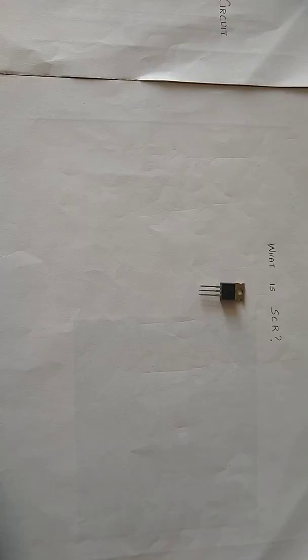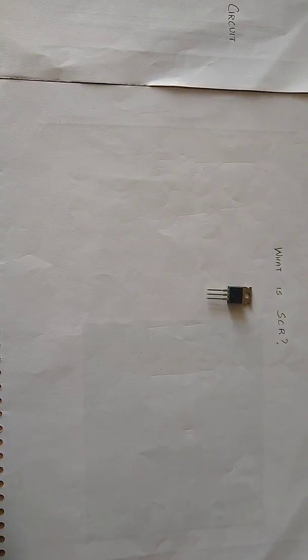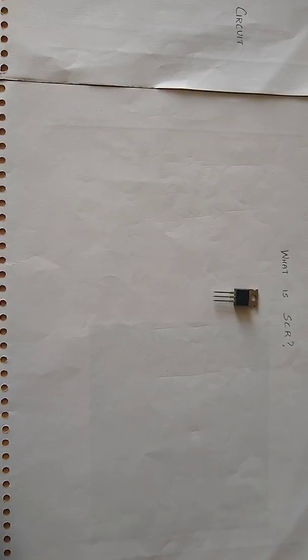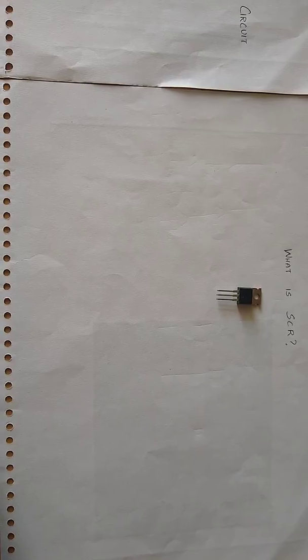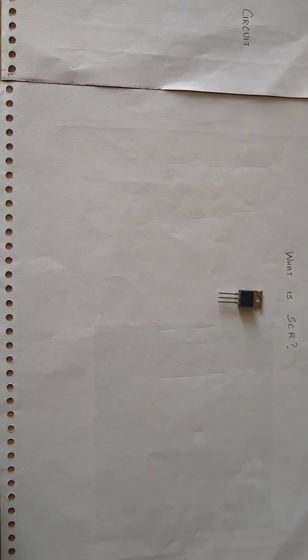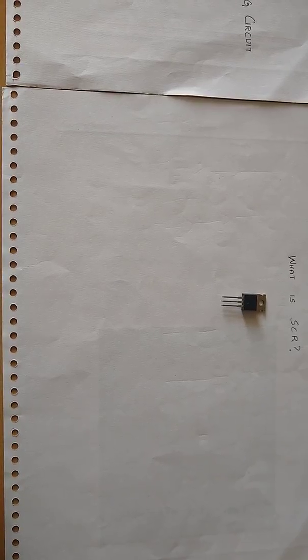The most common method of turning on SCR is a gate triggering circuit. The various types of gate triggering circuits are resistance triggering, RC triggering, and UJT triggering. Resistance triggering is simplest and economical with limited range firing angle that is between 0 to 90 degree.